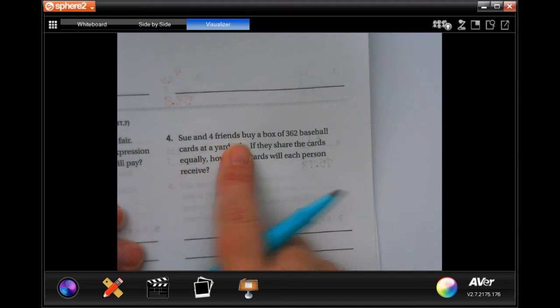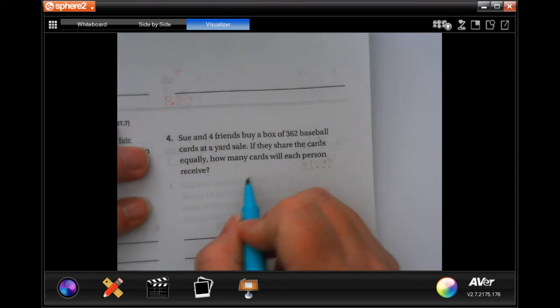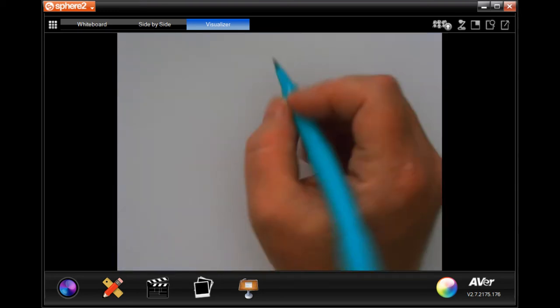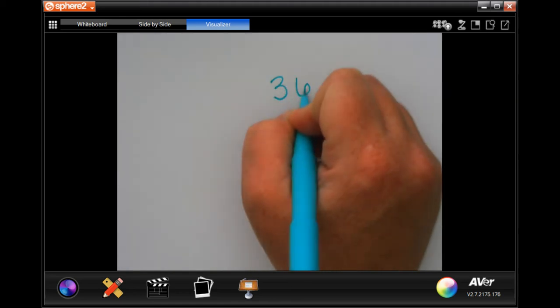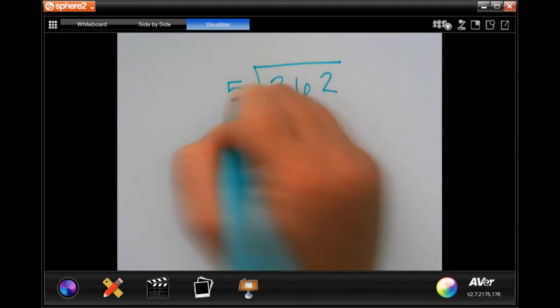Sue and four friends buy a box of 362 baseball cards at the yard sale. If they share the cards equally, how many cards will each person get? Well, Sue and four friends. So that's five people. So I'm going to go ahead and do this over here.